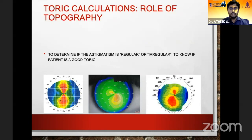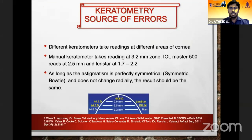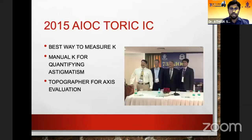If we have access to a topographer, we can analyze the total cornea properly. An important caution is that different keratometers take readings at different areas of the cornea. Do not take manual K values and enter them into your LENSTAR or IOL Master, because the IOL Master is designed for K at 2.5 mm and LENSTAR at 1.7 mm. If astigmatism varies between central and paracentral zones, this will result in wrong values.